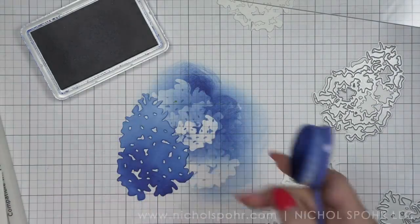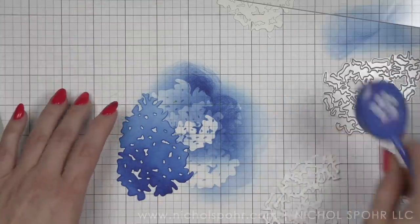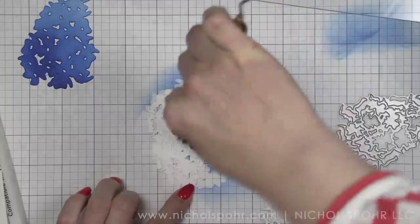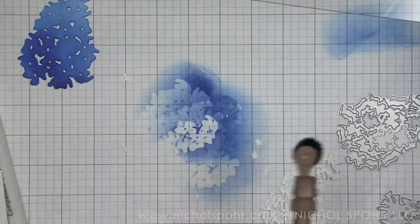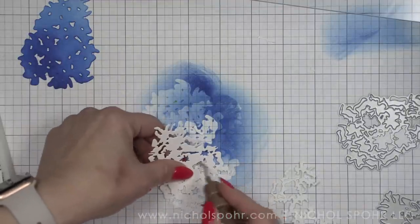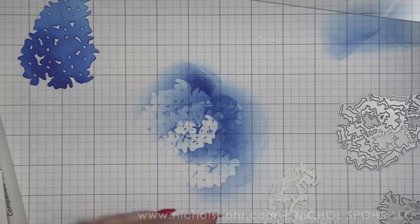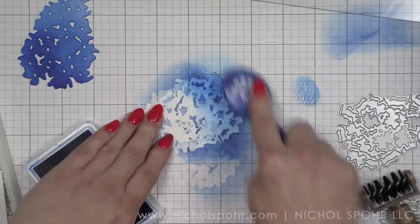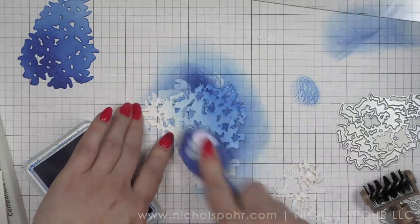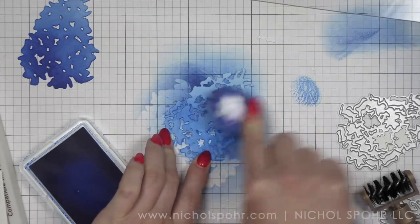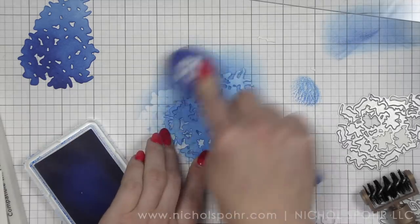I am taking my Simon Says Stamp Blending Brush, and on the very back layer of my little bush, I am inking it up with Royal Simon Says Stamp Positively Saturated Ink. For the middle layer, you can see I'm using my Spellbinders Tool-in-One to remove all those little parts and pieces inside, and we are going to ink this up with the Cadet Ink. I'm going backwards from dark to light instead of light to dark, but as long as you're cleaning off your brush between color changes, you're still going to see that difference in color between each layer.